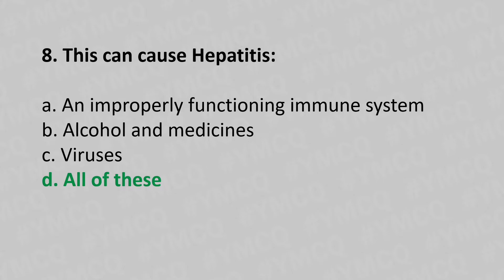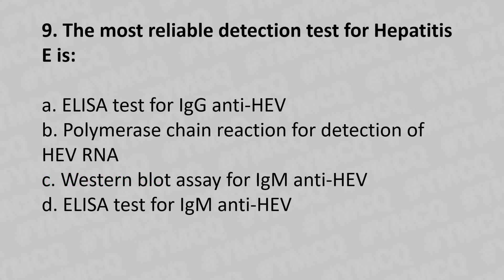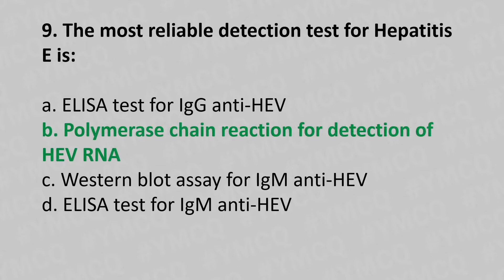Now let's move to question number 9. The most reliable detection test for hepatitis E is... Option A, ELISA test for IgM and HEV. Option B, polymerase chain reaction for detection of HEV RNA. Option C, Western blot assay for IgM and HEV. Option D, a laser test for IgM and HEV. And the answer is... Option B, polymerase chain reaction for detection of HEV RNA.